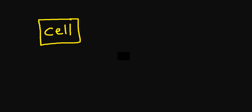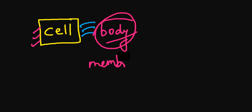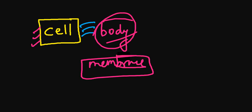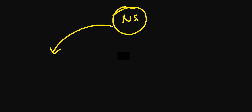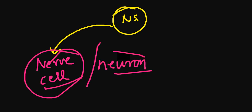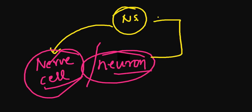The basic building block is the cell. If you studied biology in 11th and 12th you already know about the cell body, cell membrane, mitochondria, and nucleus. Every cell has a nucleus. Similarly, in our nervous system the basic building block is called a nerve cell, or neuron. A neuron is the basic cell existing in the nervous system.